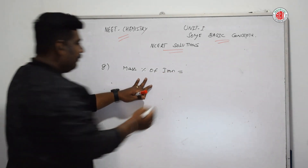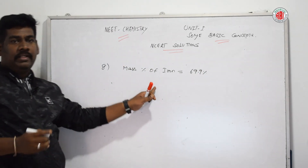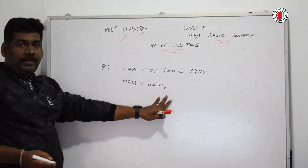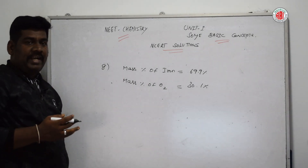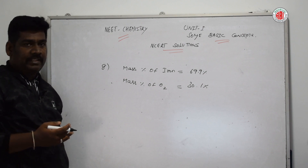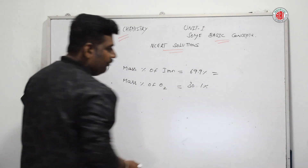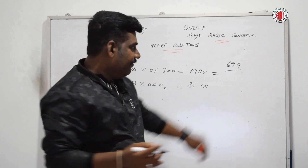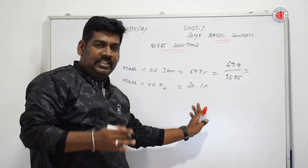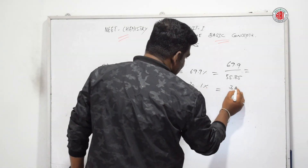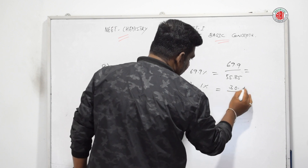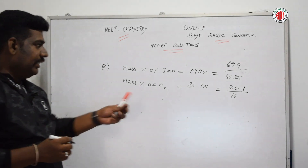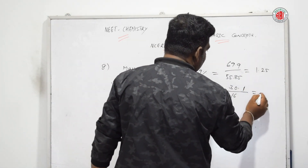Mass percent of oxygen = 30.1%. Number of moles of iron present in the oxide = 69.9 ÷ 55.85. Number of moles of oxygen present in the oxide = 30.1 ÷ 16. Taking the ratio of iron to oxygen: simplifying gives 1.25 for iron and 1.88 for oxygen.